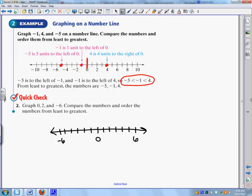So I'm going to graph these numbers. So 0 is right here. I'm going to make a dot. 2 is right here. Make a dot. And negative 6 is right here. I'm going to make a dot.